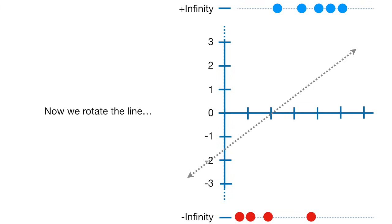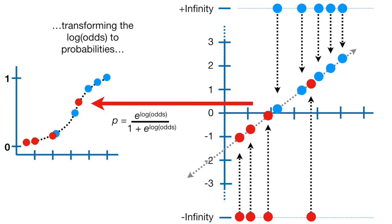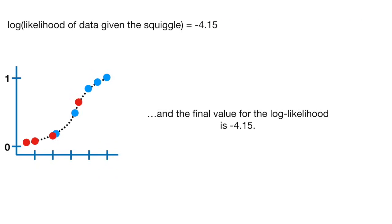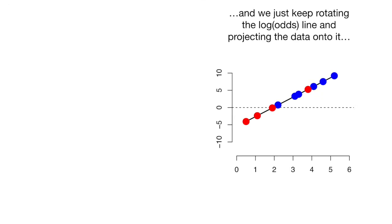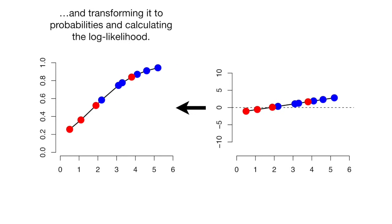Now we rotate the line and calculate its log likelihood by projecting the data onto it, transforming the log odds to probabilities, and then calculating the log likelihood. And the final value for the log likelihood is negative 4.15. So this one is not as good as the first line. And we just keep rotating the log odds line and projecting the data onto it, and then transforming it to probabilities and calculating the log likelihood.